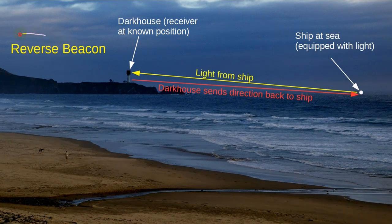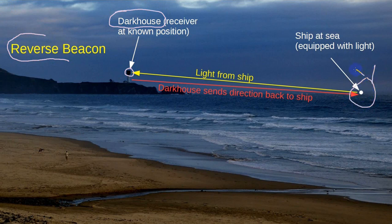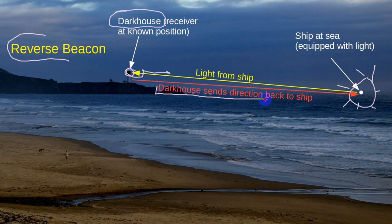Now let's reverse this. Suppose there's no light at the lighthouse — I'll call it a dark house. Instead, the ship at sea carries a light aimed at the dark house. In the dark house is someone with binoculars who determines what direction the ship's light is coming from. Through a feedback loop over radio or satellite, this information is passed to the ship. The ship knows it has been seen and gets feedback about its position and the strength of its light.